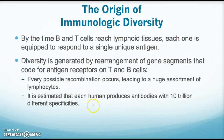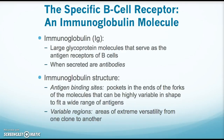It's estimated that each human produces antibodies with 10 trillion different specificities. With that many different specificities, for any bacteria or virus encountered there should be one antibody able to recognize it. For B cells, the part that binds with antigen specifically is called the immunoglobulin, often shortened to Ig.